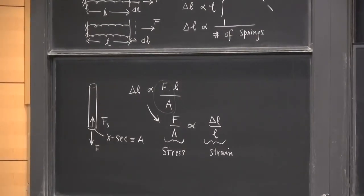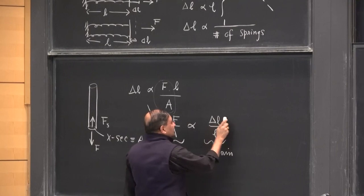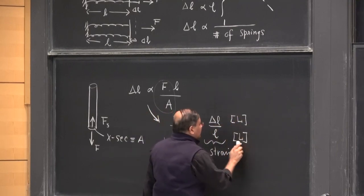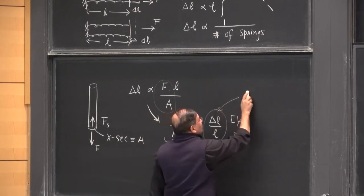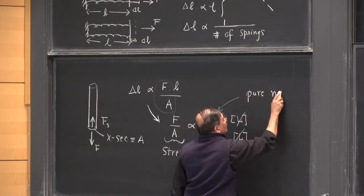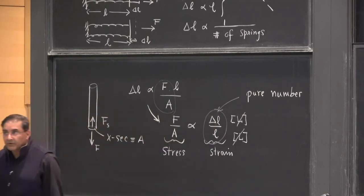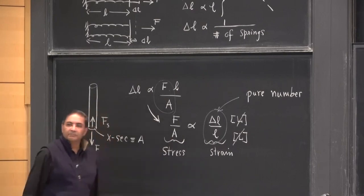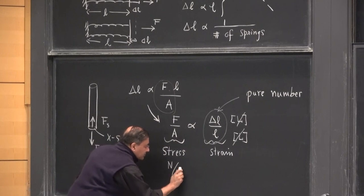Stress is force per unit area. Strain is the stretch or squeeze that has happened with regard to the original length. Strain has length on top and length on the bottom, so they cancel out — strain is a pure number. But force per unit area is not a pure number: force is in newtons and area is in meters squared, so stress is in newtons per meter squared.